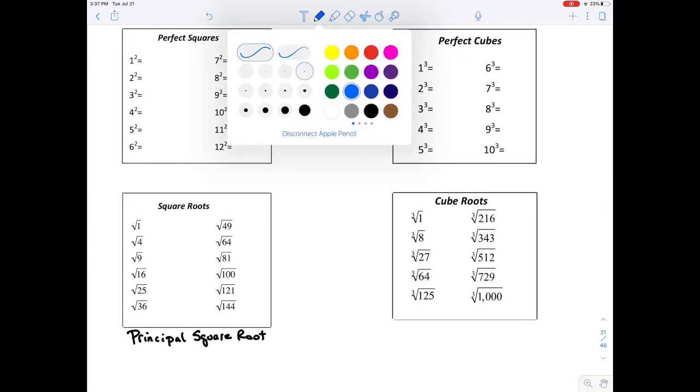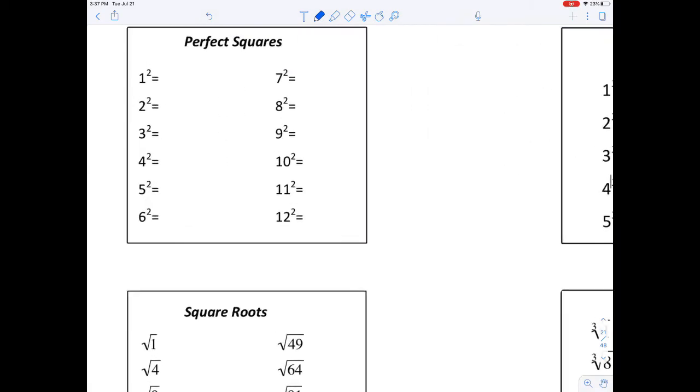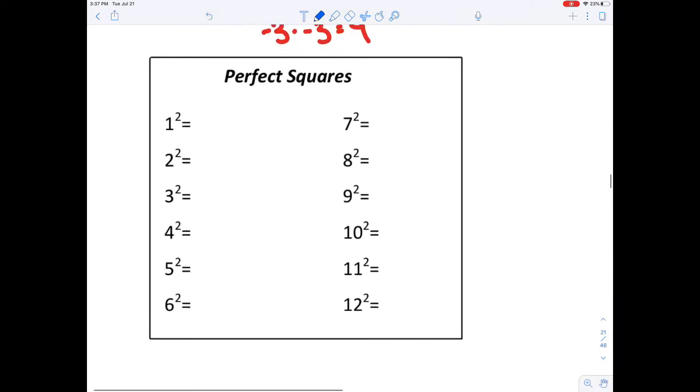But the nice thing is, they'll tell you, just like I'll tell you, if you forget your perfect squares or your perfect cubes, you simply multiply the base, which in this case is 1, times 1, or 2 times 2, or 3 times 3, and 4 times 4, and so on. And you already know these numbers.